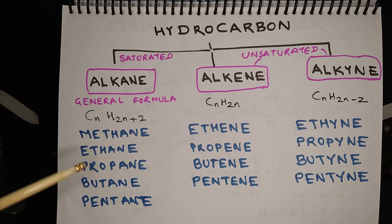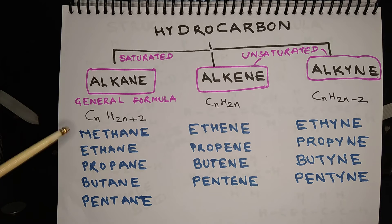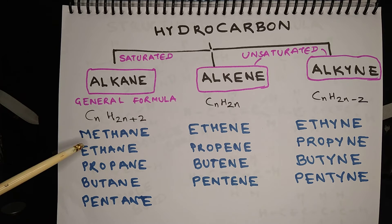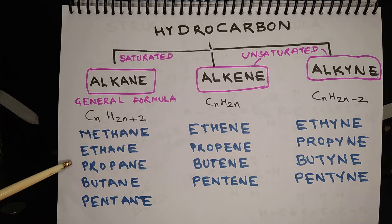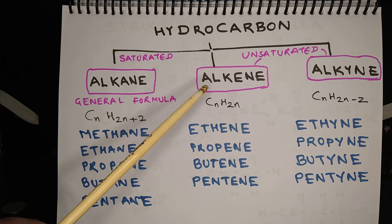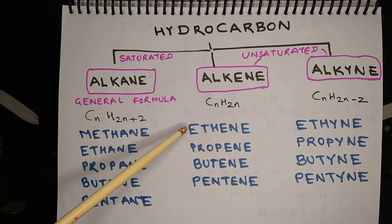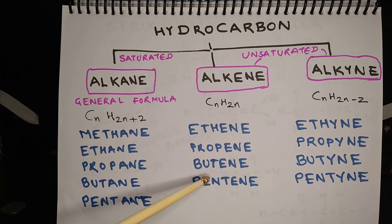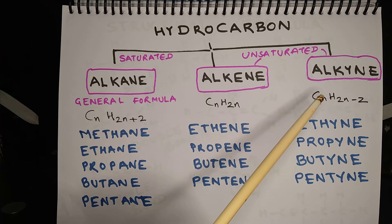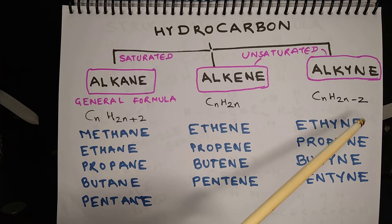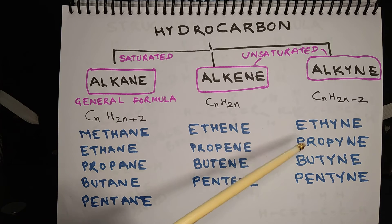Some examples of alkane are methane, ethane, propane, butane, and pentane — in sequence of number of carbon atoms. So for one atom it is methane, two is ethane, three is propane, four is butane, five is pentane. The general formula of alkene is CnH(2n), and examples are ethene, propene, butene, pentene. The general formula for alkyne is CnH(2n-2), and examples are ethyne, propyne, butyne, and pentyne.